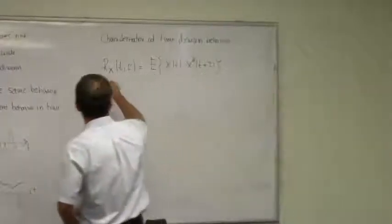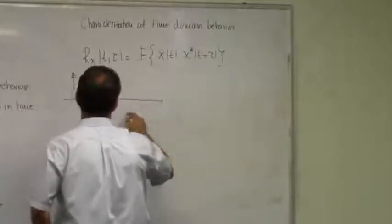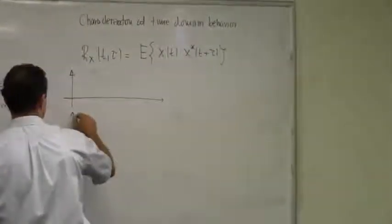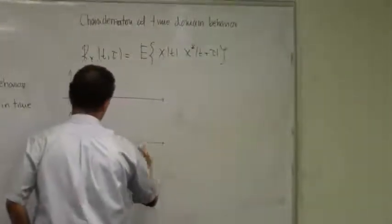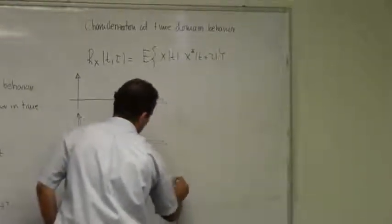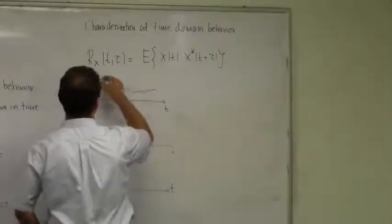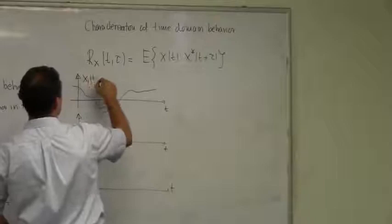How should you understand it? Let's draw a couple of graphs to illustrate this. I have some random process here with different realizations of this process.